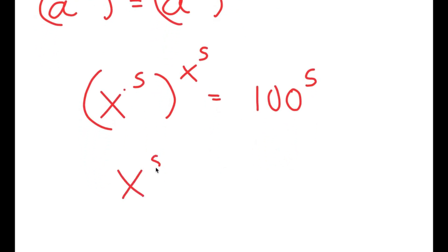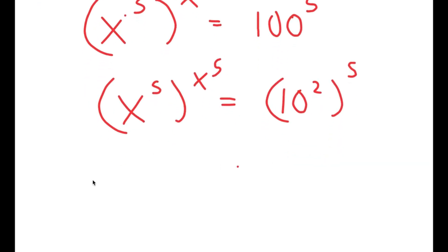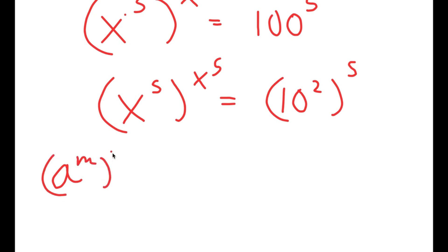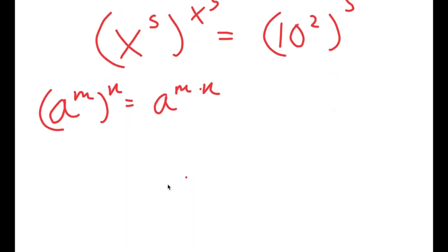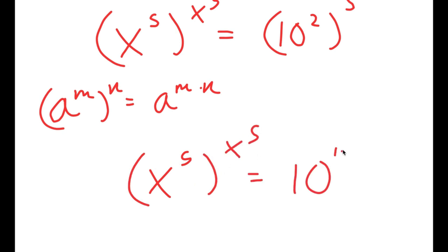Now I'm going to rewrite 100 as 10 squared. So now I have 10 squared to the power of 5, and another property of exponents is that a to the power of m to the power of n is equal to a to the power of m times n. So 10 to the power of 2 to the power of 5 equals 10 to the power of 2 times 5, which is 10 to the power of 10.